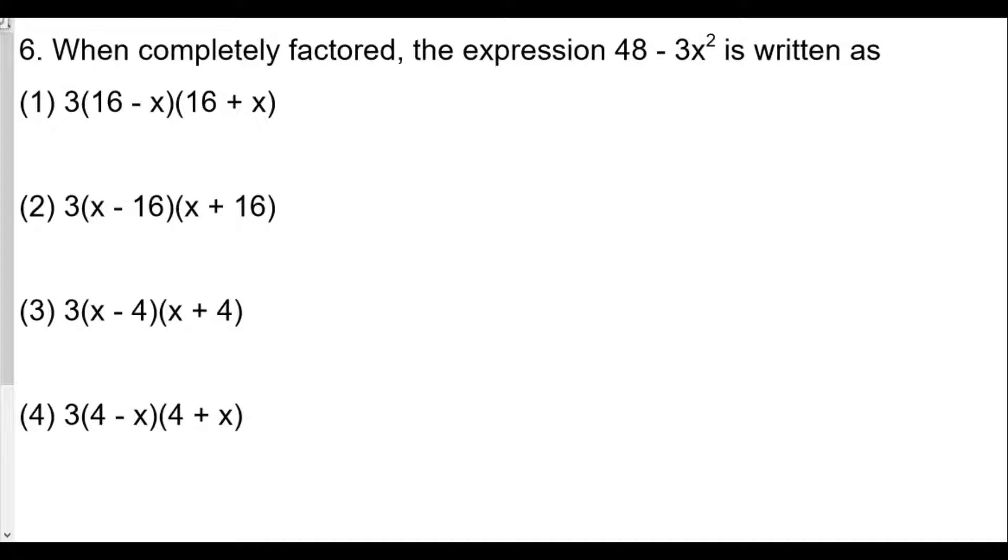For number six, multiple choice question: when completely factored, the expression 48 - 3x² is written as. Just like we did before in previous problems, we're going to find the GCF and the GCF in this case is equal to 3. So 48 divided by 3 is 16 and 3x² divided by 3 is x². So we're going to get 3 times 16 - x².